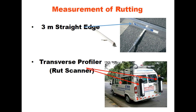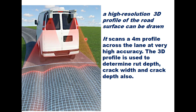Rutting can also be measured through a network survey vehicle, which can draw the transverse profile of the road. It has two rut scanners that take pictures of the road surface and draw the profile. It can also have high-resolution cameras that draw a 3D profile of the road surface. It scans a 4-meter profile across the lane at very high accuracy, and this 3D profile is used to determine rut depth. Even crack width and crack depth can also be measured using this equipment.